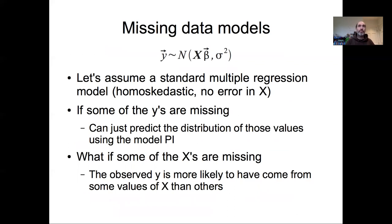So let's think about how we model missing data. To keep things simple, let's assume our standard multiple regression model without the variance heterogeneity we talked about in the last lecture — we'll assume homoscedasticity, no error in x, and a linear model. That said, everything I'm talking about here generalizes to nonlinear models or when any of these other assumptions have been violated. We're just focusing on the linear model to keep the ideas simple, but they are all generalizable.